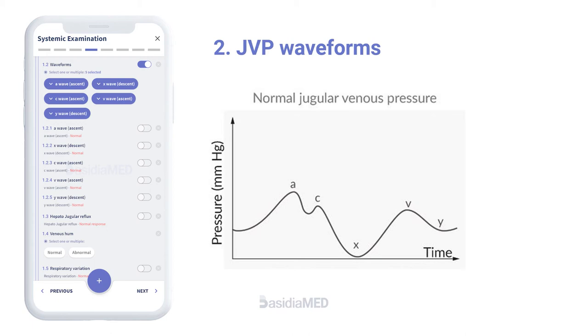JVP waveforms: Normal JVP waveforms consist of 3 positive and 2 negative pulse waves. The positive waves are A, C, and V; and the negative waves are X and Y. The abnormalities in the waves will be discussed in detail in the upcoming videos.